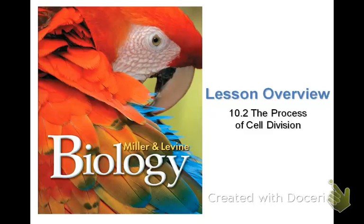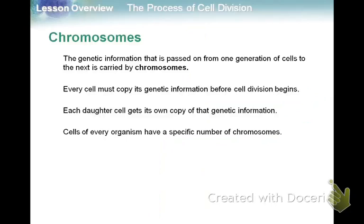Section 10.2 is about how cells divide. A lot of the stuff you saw in class, the different terminology, but I just want to go over it one more time. Chromosomes are the chunks of genetic information that contain the genetic information passed from one generation to the next. The important thing is before a cell divides, that genetic information, that DNA, gets copied so that each daughter cell has a copy of that genetic information.